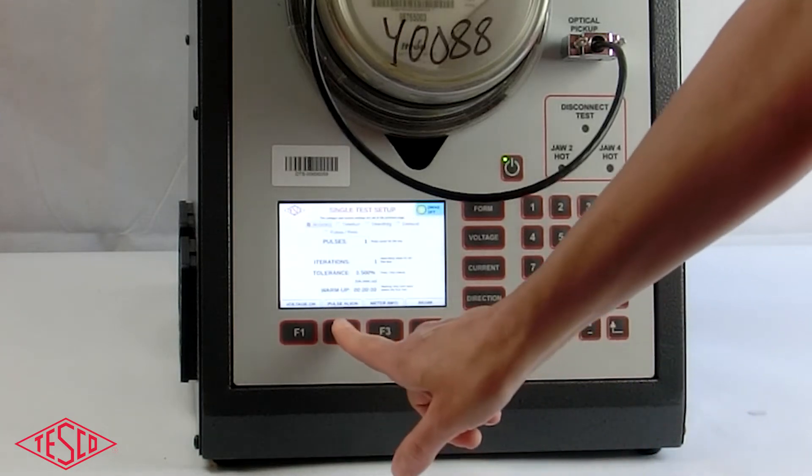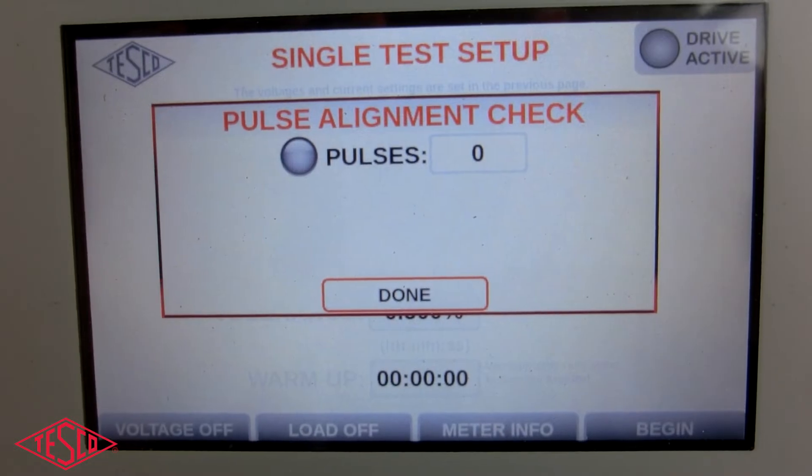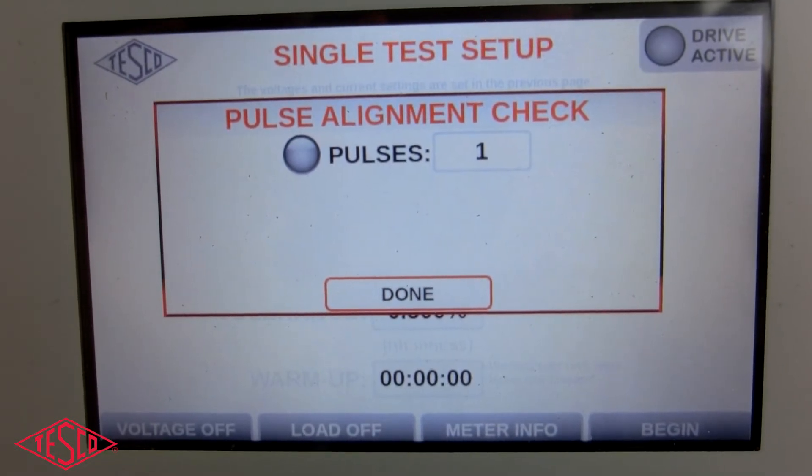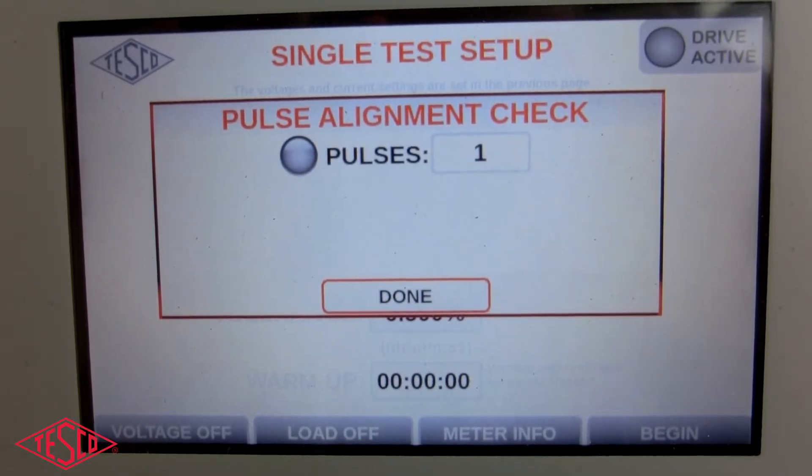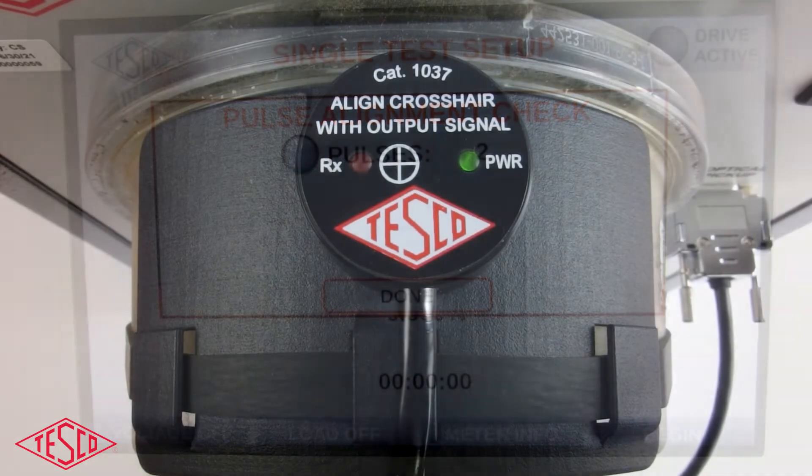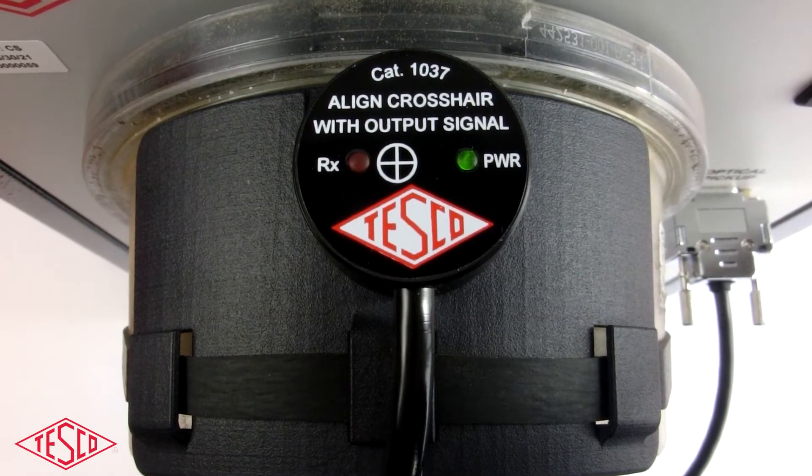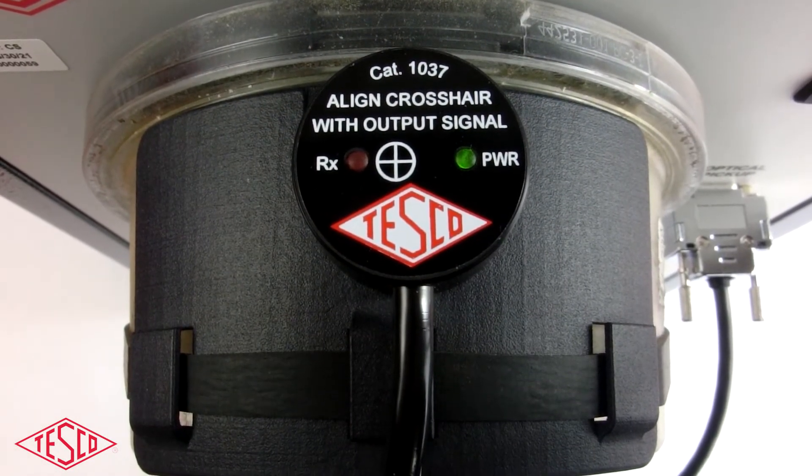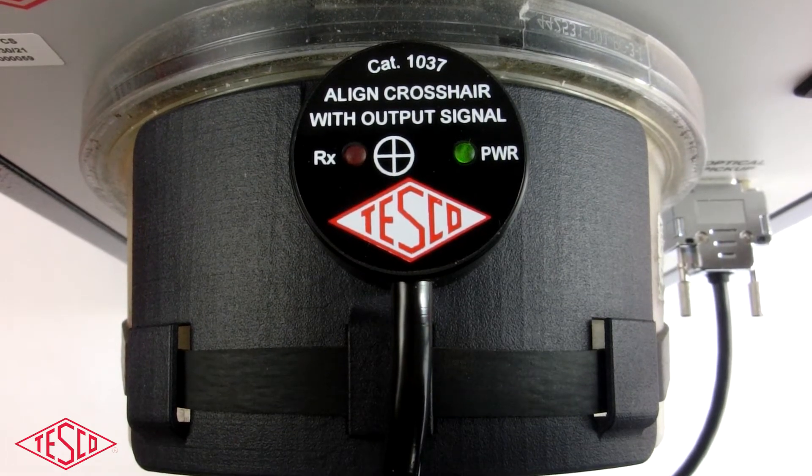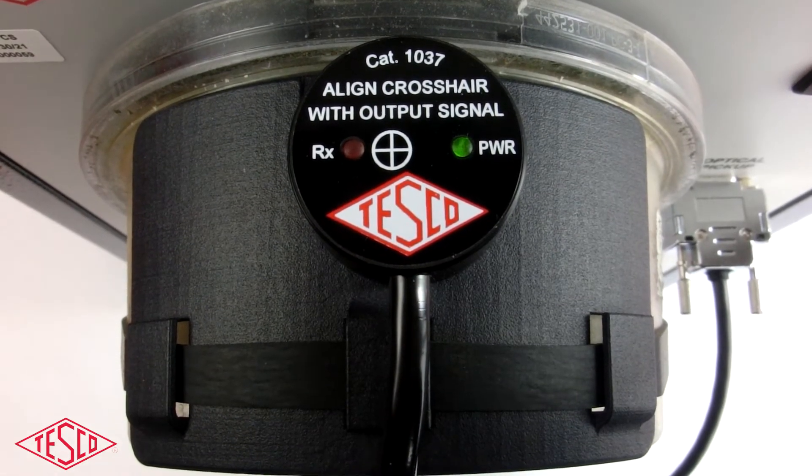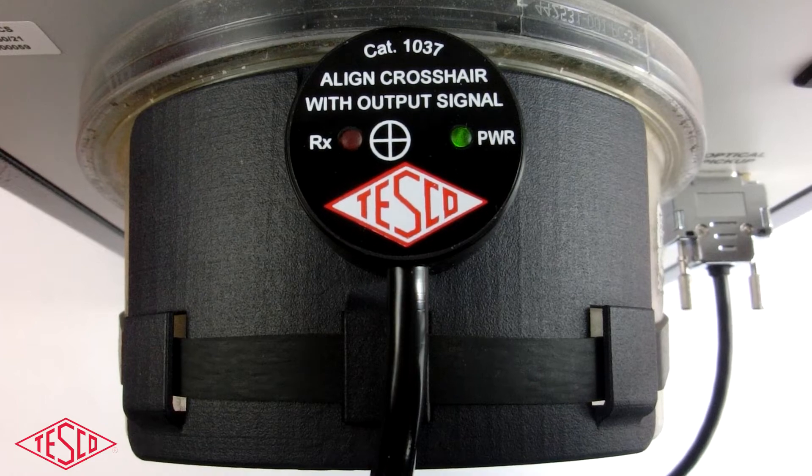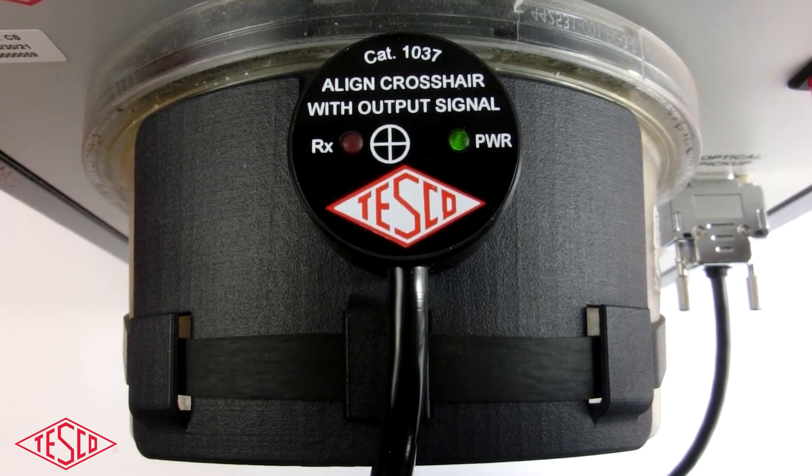Okay, I'm going to select the pulse align test here and we'll be able to see the pulses being counted on the screen of the 2990 here. There's one and there's two. And here on the 1037, you'll see the red light light up. And there it goes.